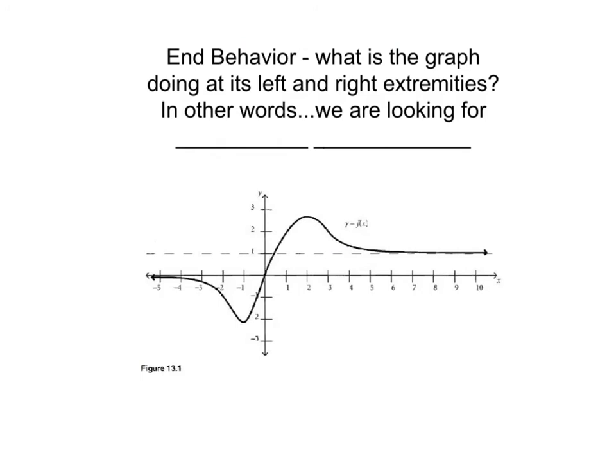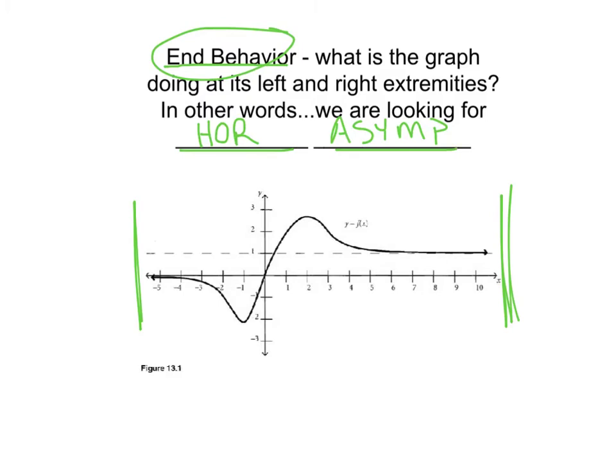Now I want to talk about a mini-topic that I call end-behavior, and I define end-behavior as what the graph is doing at its left and right extremities. If you go to the far left edge of your screen or the far right edge of your screen, what kind of behavior is the graph exhibiting? Is it still unpredictable and erratic, or is it kind of settling into a pattern and becoming very predictable? Those are the questions I like to ask. So in other words, what are we looking for here at the ends? We're looking for horizontal asymptotes. So any time I use the terminology end-behavior, what I'm really talking about are horizontal asymptotes.